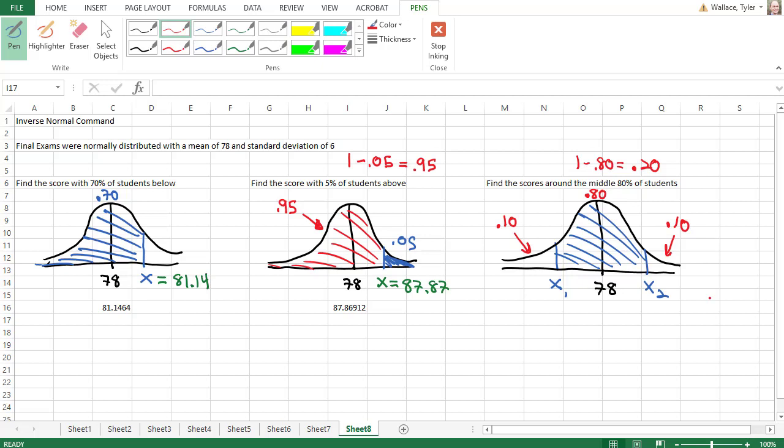Since the normal inverse command is interested in areas to the left, first we're going to do it with that 10% value. So to get that X1, we want equals norm.inverse, probability of 0.10, comma, the mean is 78, comma, the standard deviation is 6. And we find out that first value, that X1, is equal to 70.31.